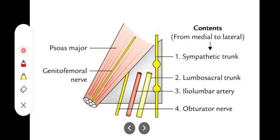From medial to lateral side, these are the contents: the sympathetic trunk, the lumbosacral trunk, the ilio-lumbar artery, and the obturator nerve. These are the contents of the Triangle of Marsili that we need to remember.